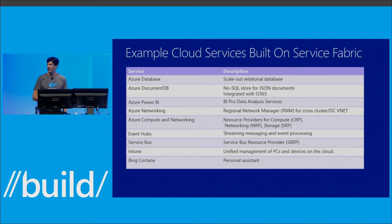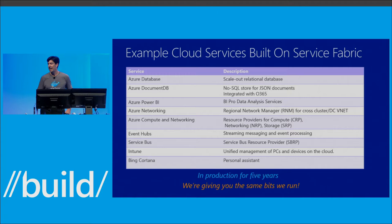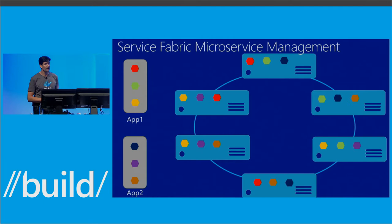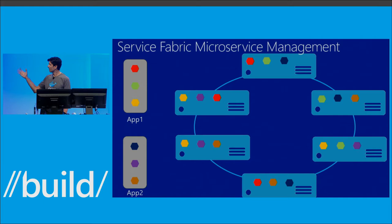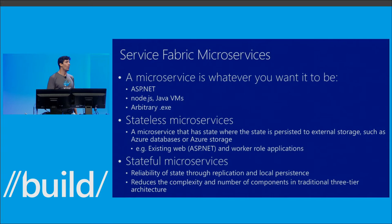The SDK we're making available — the URL should be live now — is not something that looks different from what we run internally. We're giving you the exact same bits: this SDK is the same SDK all these services use. Let me give you an idea of what it can do visually. I've got two applications consisting of multiple microservices, deployed with placement constraints and load balancing, out to a cluster of machines. If a machine fails, Service Fabric automatically heals those instances to other servers.